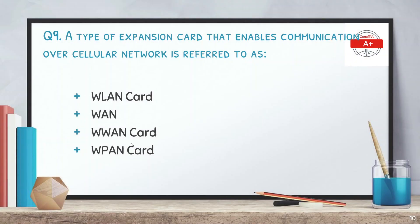The next question is: a type of expansion card that enables communication over a cellular network is referred to as? The options are WLAN card, WVAN card, and WPAN card. The answer is the WVAN card, which stands for wireless wide area network card.